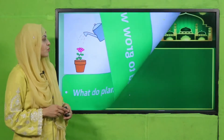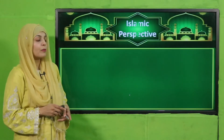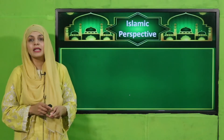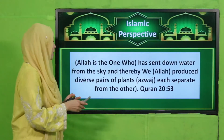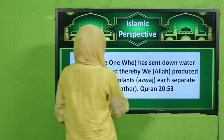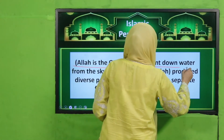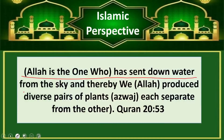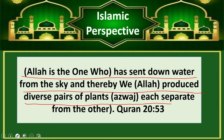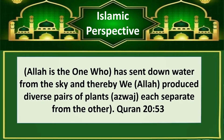Now let's quickly move forward towards the Islamic perspective. Allah says in the Quran that Allah is the one who has sent down water from the sky, and thereby we produce diverse pairs of plants, each separate from the other.